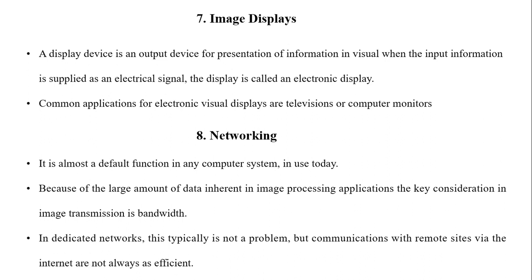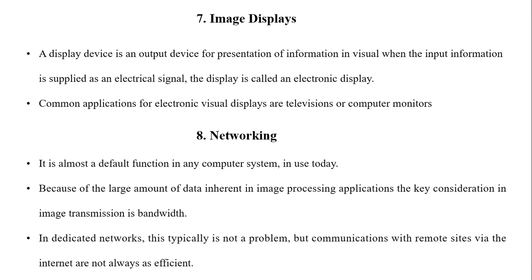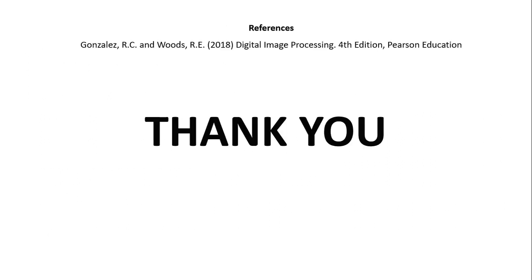Networking is very important because rarely in today's world does a computer work in a standalone or remote manner — it is almost a default function in any computer system. Because of the large amount of data inherent in image processing applications, the key consideration for image transmission is bandwidth. In dedicated networks this is typically not a problem, but communication with remote sites via the internet is not always efficient. Therefore, when capturing an image we should store it in a compressed format to require less storage, and during transmission we can also transmit the compressed signal to utilize bandwidth properly. That is all about the components of the image processing system.